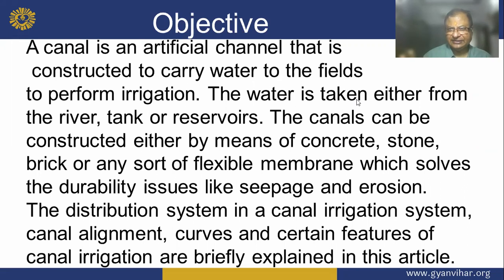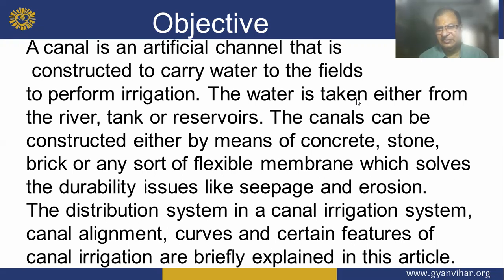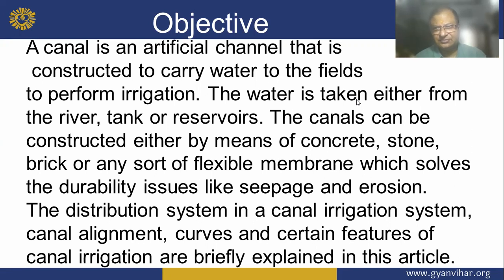The water is taken either from the river bank or reservoirs. The canal can be constructed either by means of concrete, stone, brick, or any sort of flexible membrane which solves the durability issues like seepage and erosion. The distribution system in a canal irrigation system includes the canal alignment and curve.